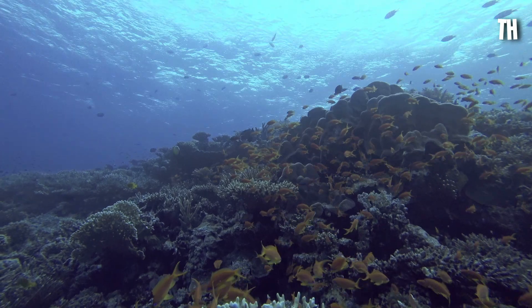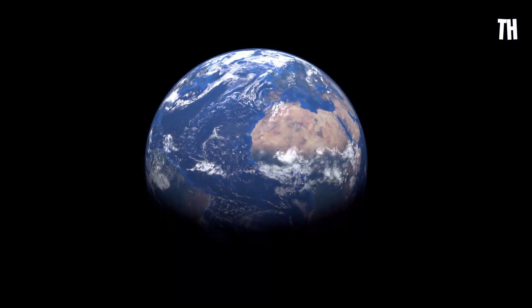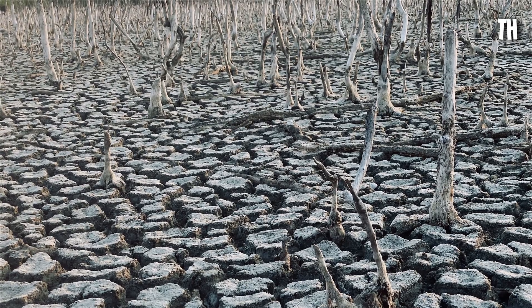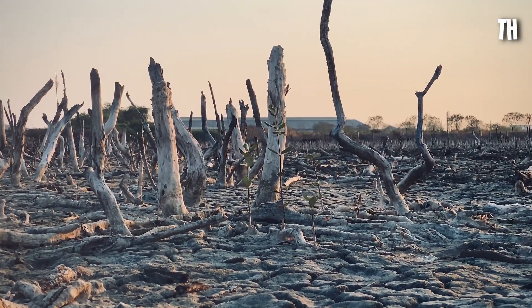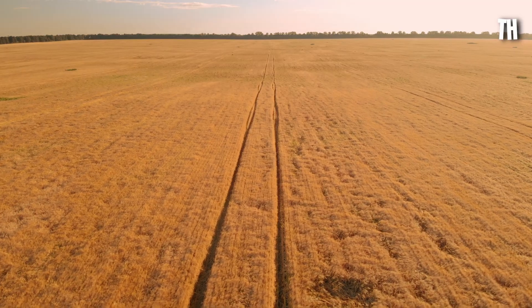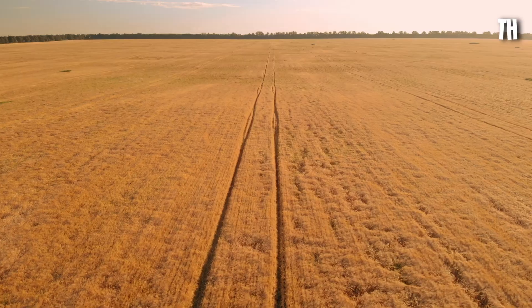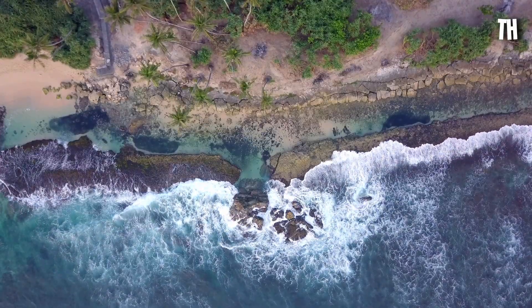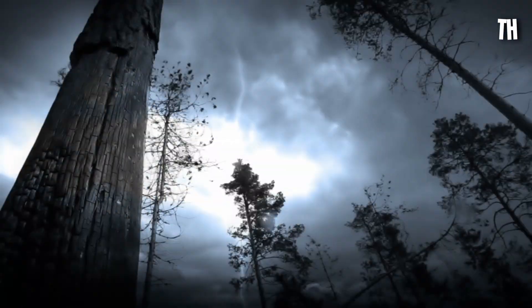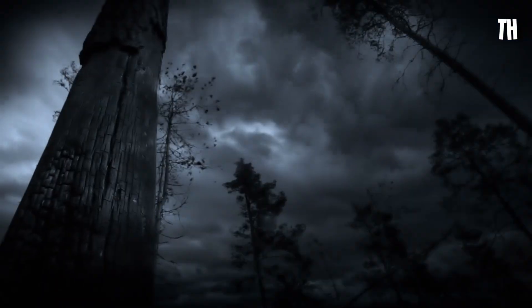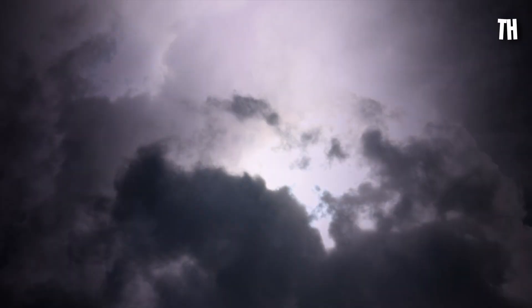In one year, global food systems collapse. Famine spreads, quietly at first, then violently. Supply chains fail. Crops don't grow. Oceans offer nothing. Weather patterns spiral into chaos. Seasons lose meaning. Droughts, floods, and storms arrive without warning and without end.